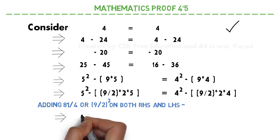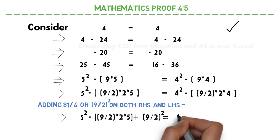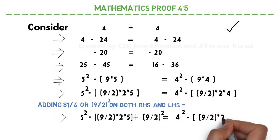I will be getting 5 square minus 9 by 2 into 2 into 5 plus 9 by 2 whole square. I have added this to the left hand side. The similar thing will be done on the right hand side as well. So here we are adding plus 9 by 2 whole square.